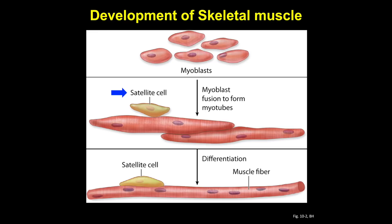You can also see in this diagram a satellite cell, which is a shorter, unfused myoblast cell that retains the ability to divide. This is the stem cell of the muscle cell, and these cells are responsible for repair and regeneration.